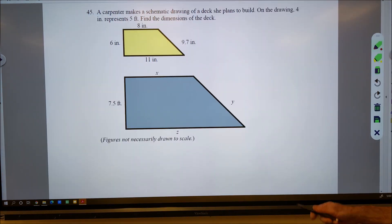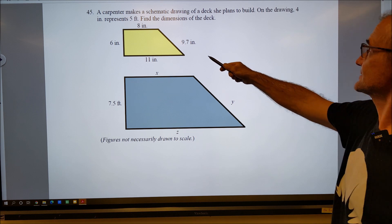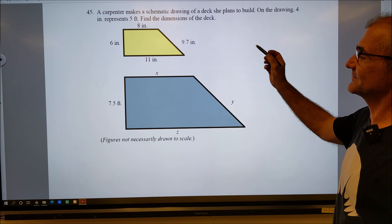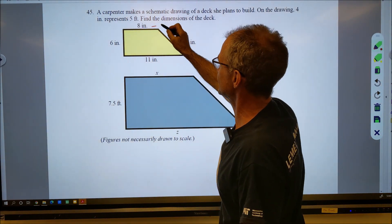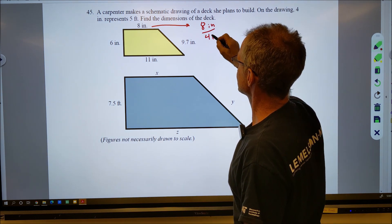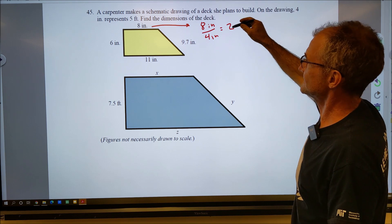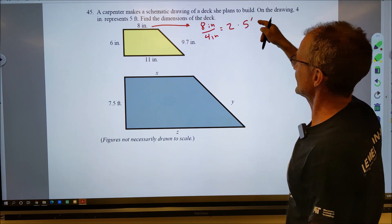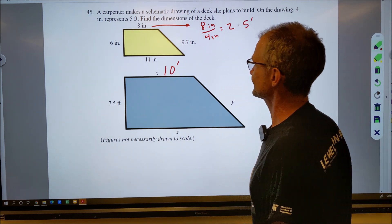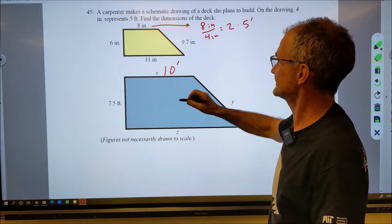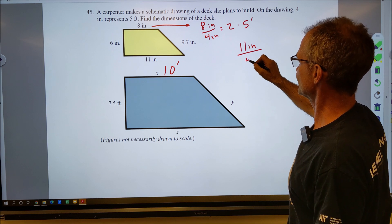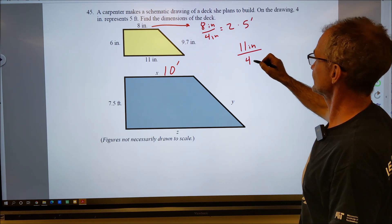Number 45: A carpenter makes a schematic drawing of the deck. This is the schematic. On the drawing, it represents 4 inches is 5 feet. Alright, so this is 8 inches. I'm going to do 8 inches divided by the 4 inches, you get 2. I'm going to do that 2 times the 5 feet. One tick mark is feet, so 2 times 5 feet, this is going to be 10 feet.